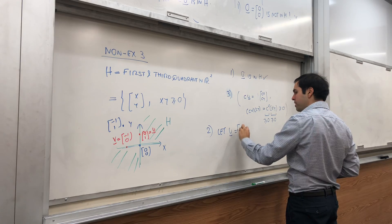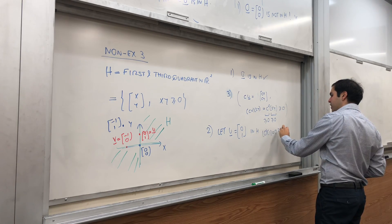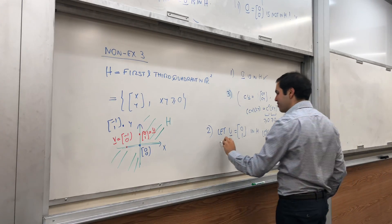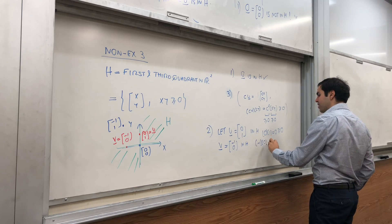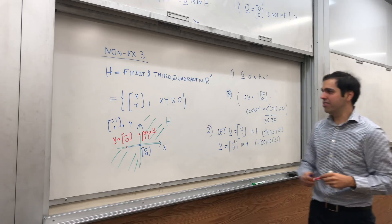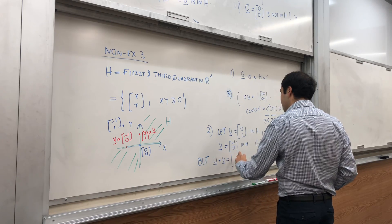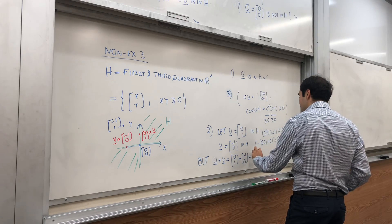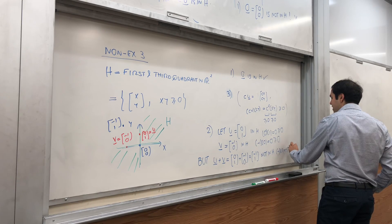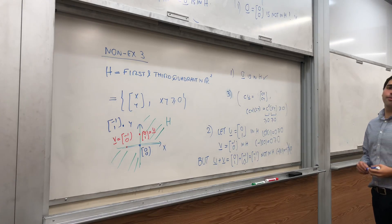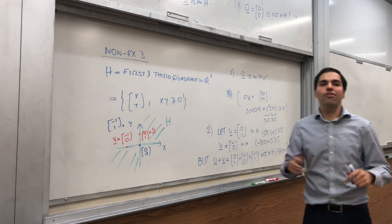So, let u be (0, 1), and again, this is in H, because zero times one equals zero, and it's greater or equal to zero, so xy is still greater or equal to zero, and v be (-1, 0), also in H, because minus one times zero, it's still greater than or equal to zero, that's right, this greater than or equal is very important. But, let's see, u plus v, that's (0, 1) plus (-1, 0), and that's (-1, 1), not in H, because minus one times one, which is minus one, that's not greater or equal to zero anymore. So, we basically have two vectors in H whose sum escapes, so that's why this H is not a subspace.